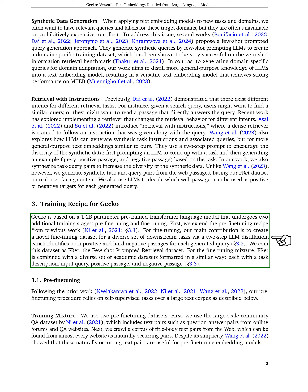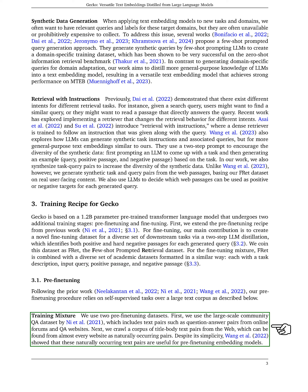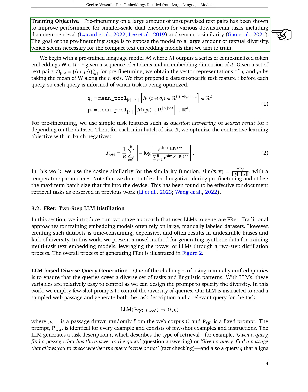This dataset includes positive and hard negative passages for each query. We combine FRET with various academic datasets for fine-tuning. Our pre-fine-tuning process involves self-supervised tasks on a large text corpus. We use two datasets for pre-fine-tuning: a community QA dataset and a corpus of title-body text pairs from the web.